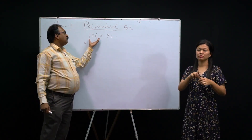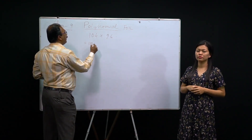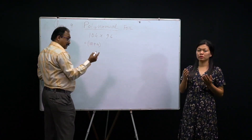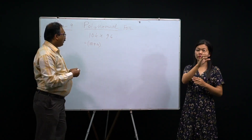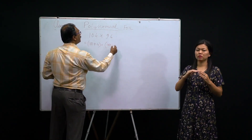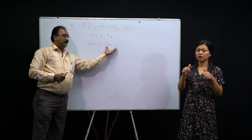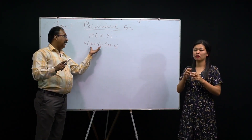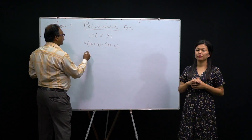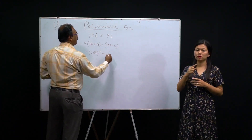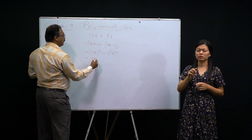Now look here: 104 × 96 — find the product using identity. You can easily write 100 + 4 for 104. But for 96 you cannot write 100 + something because 96 is below 100. So you write 100 − 4 = 96. This makes it (100+4)(100−4), which is the form (a+b)(a−b). The formula is a² − b². So: first term squared = 100², minus second term squared = 4².